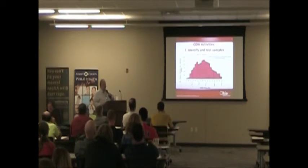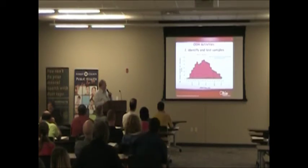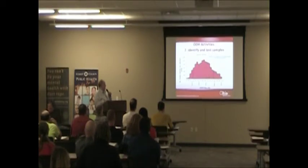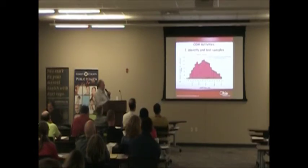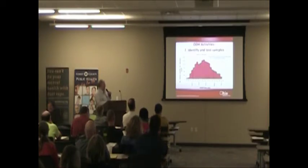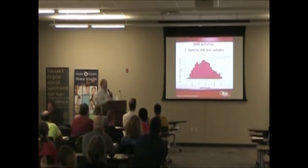Once mosquitoes are identified, all Culex are pooled and sent for testing. Looking at the results, you can see the red proportion of each bar represents the number of samples positive for West Nile. Activity started pretty early, stayed very low, then peaked around week 32 — what I'd call a normal West Nile year, not a particularly bad one. What we'd be concerned about is seeing that peak happen much earlier or much higher.